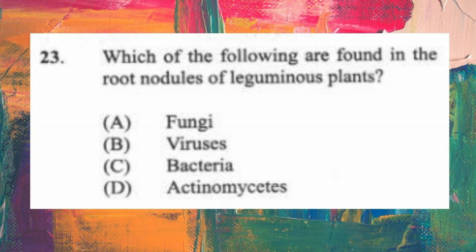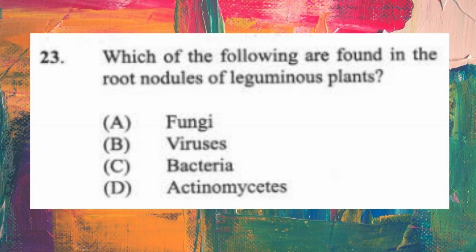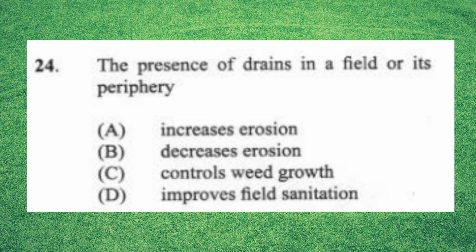Question 23: Which of the following are found in the root nodules of leguminous plants? (a) fungi, (b) viruses, (c) bacteria, (d) mycorrhizae. The answer is C, bacteria. The bacteria responsible for carrying out nitrogen fixation is the nitrogen-fixing bacteria.